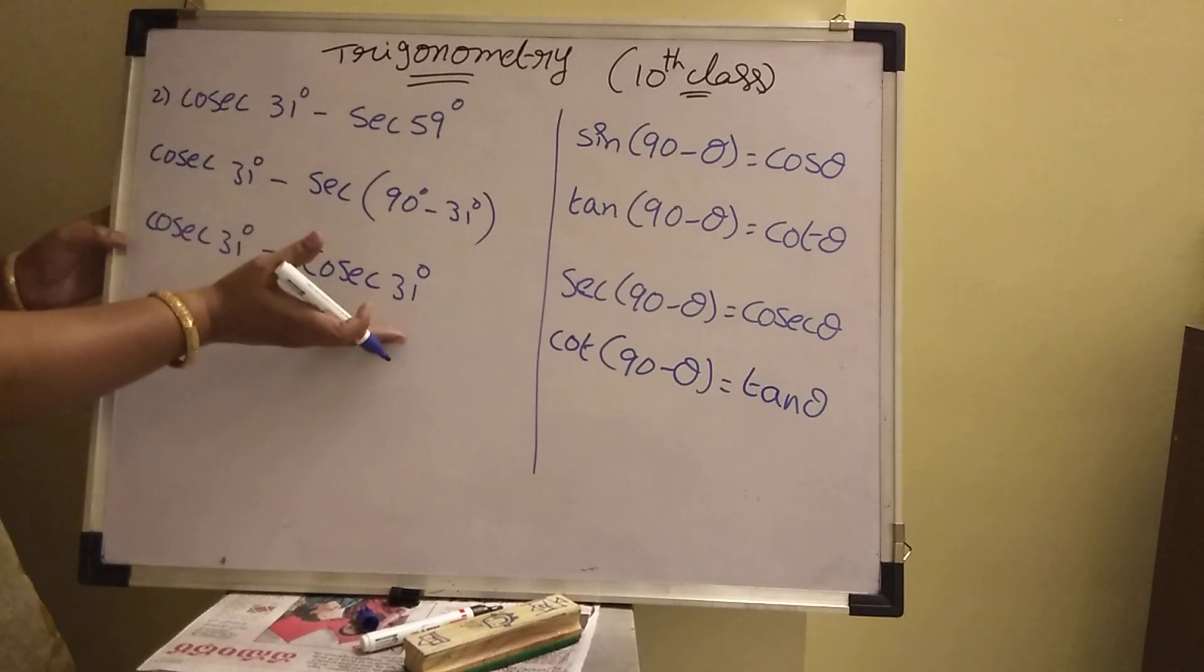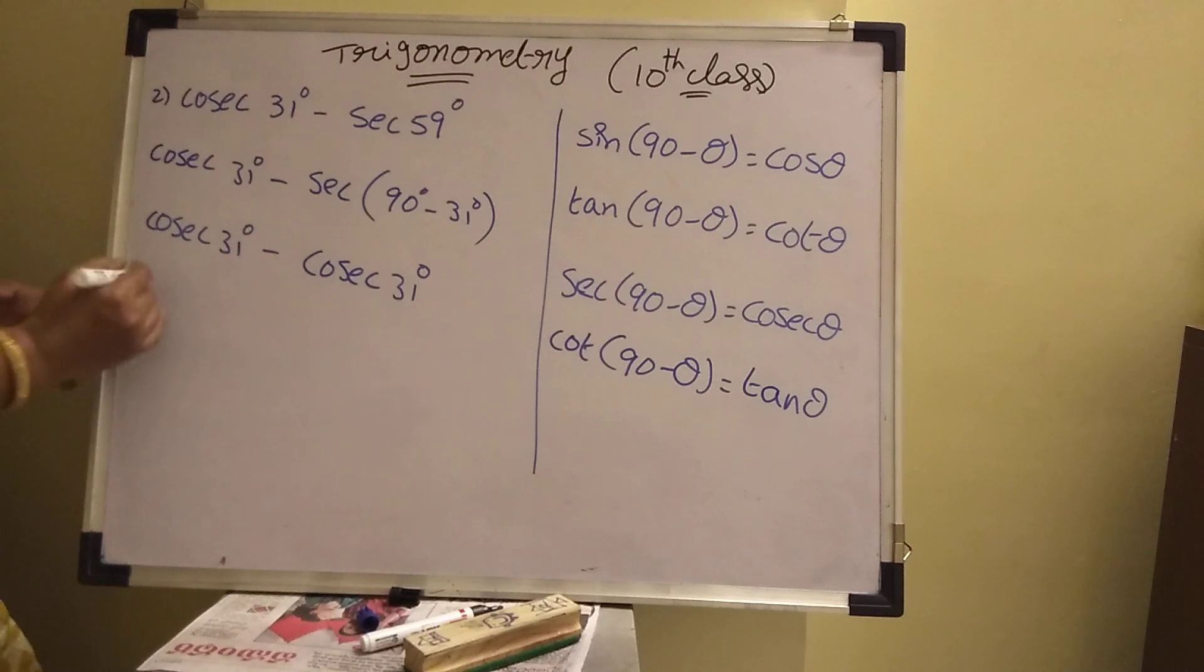So here, cosecant 31. Here answer, cosecant 31. Plus or minus. Then cancel. Both functions zero. Sum will answer will be zero. See, it will be easy now.